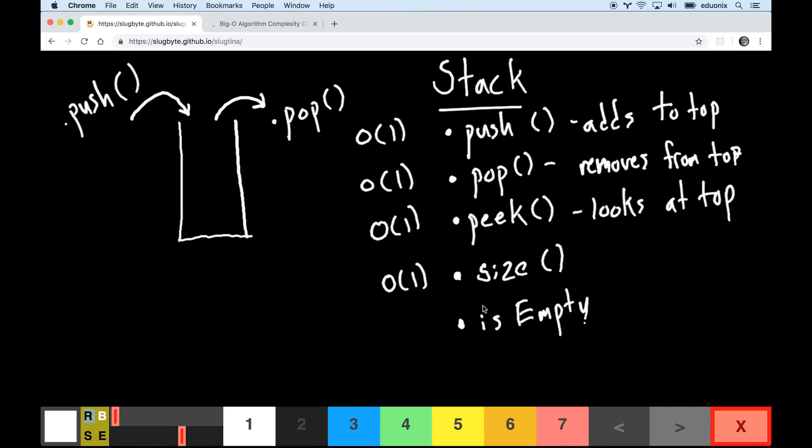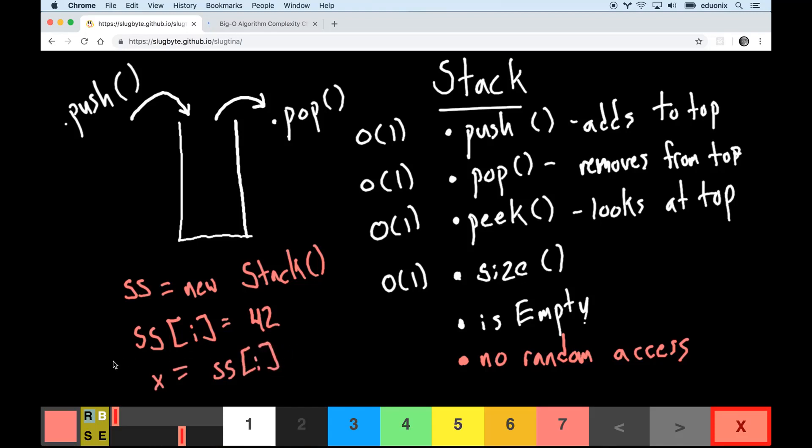What the stack does not have is no random access. So one thing that you cannot do is you cannot say that you have something like a stack and you cannot do something like ss at i equals 42 or x equals ss at i. This is simply not allowed. You do not have that on a stack. The only things you do have is the ability to push things on it and the ability to pop things off.